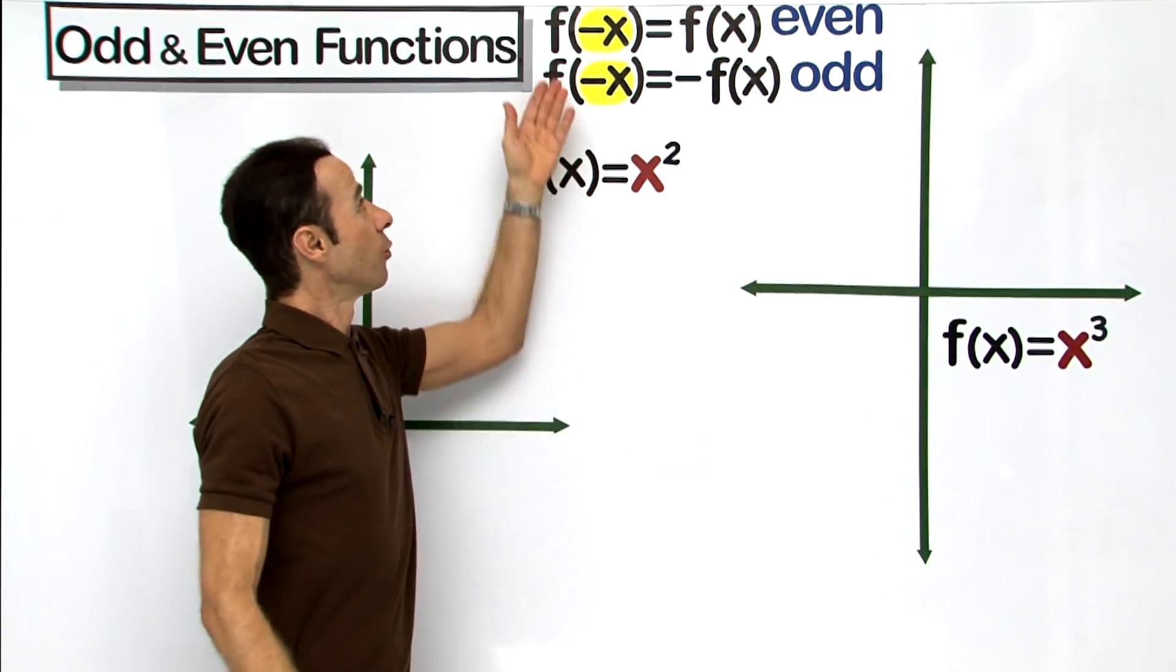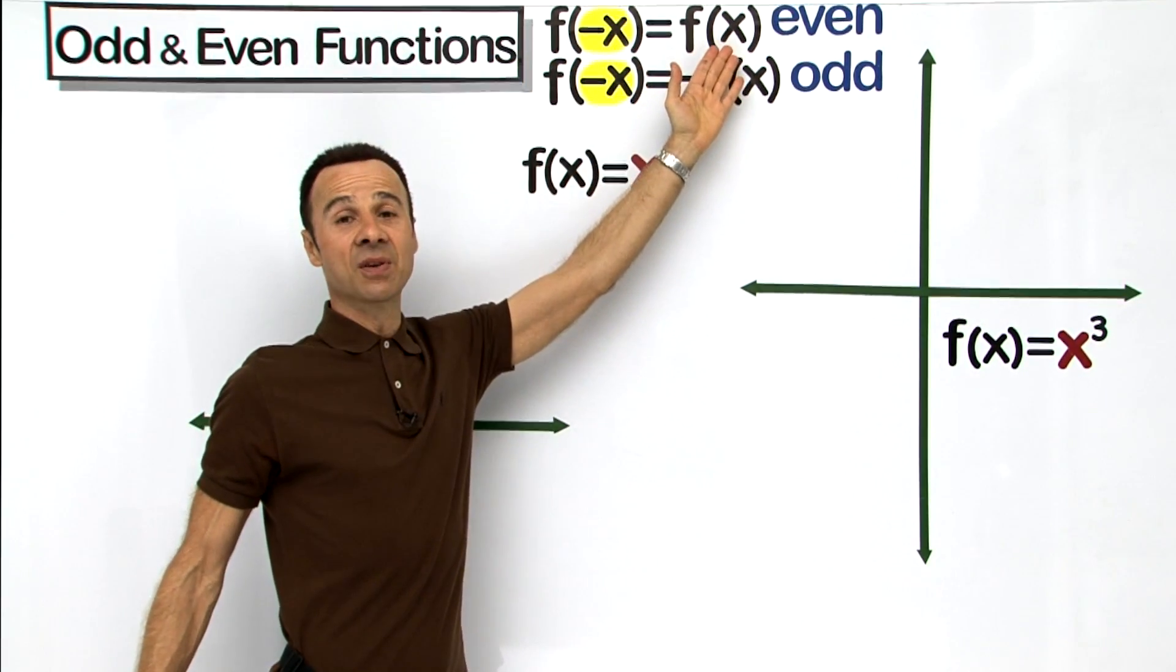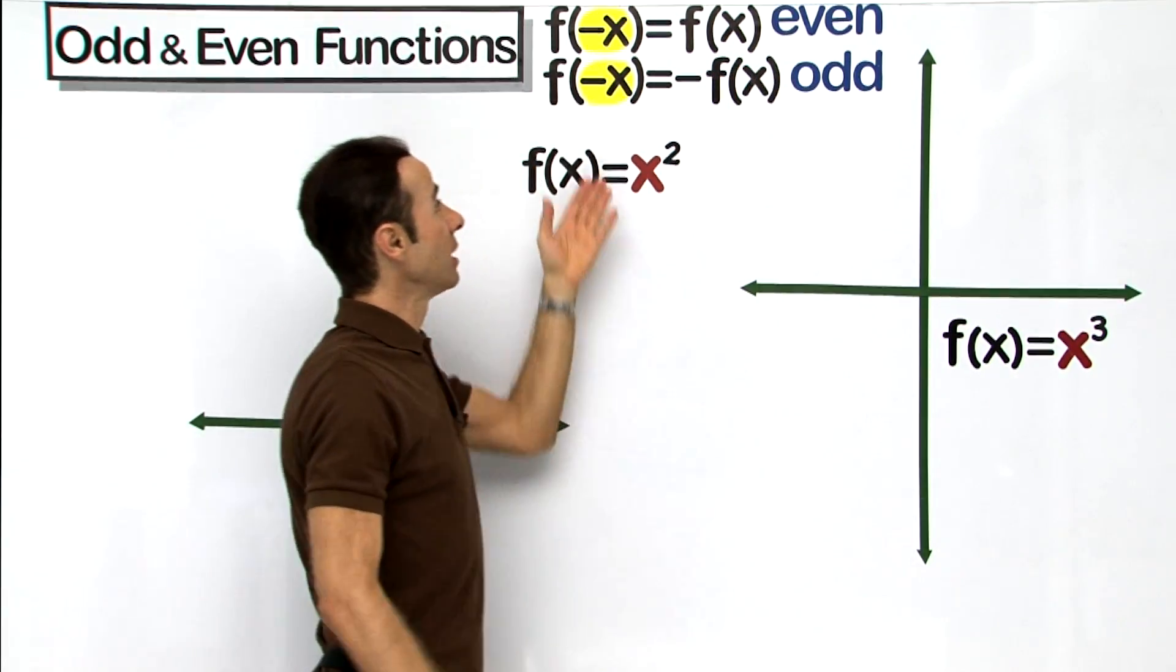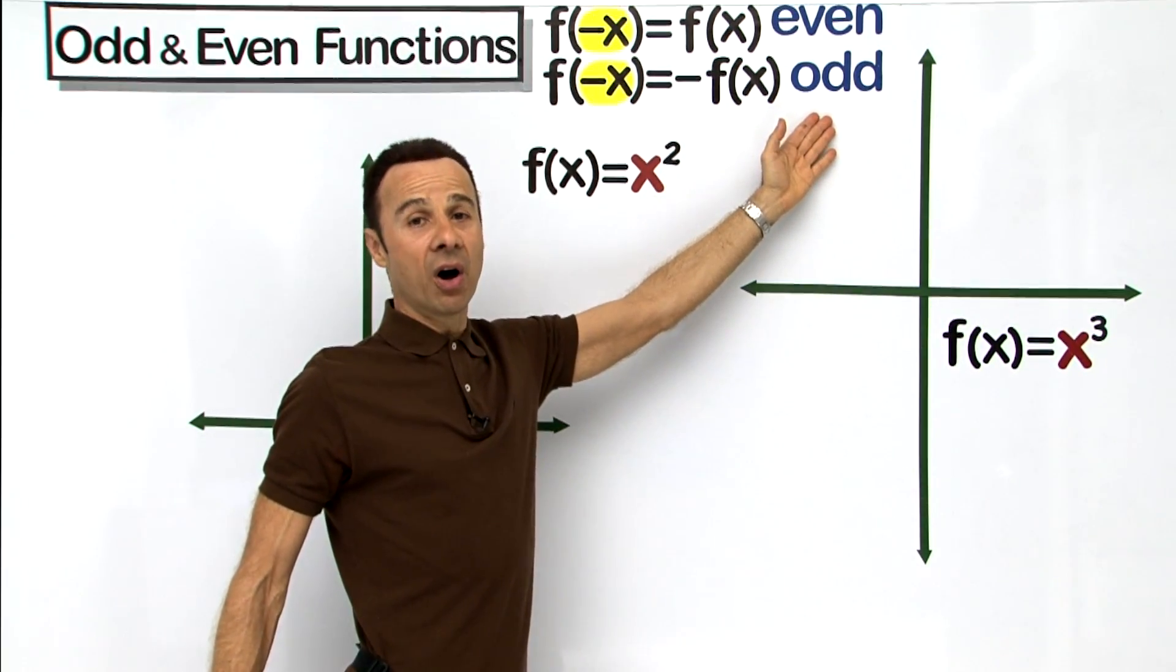Well here is the criteria: when we put in negative x into the function and it turns out to be the same as the function x as it originally was, then it is even. If we put a negative x in the function and it comes out as negative function, then it is going to be odd.